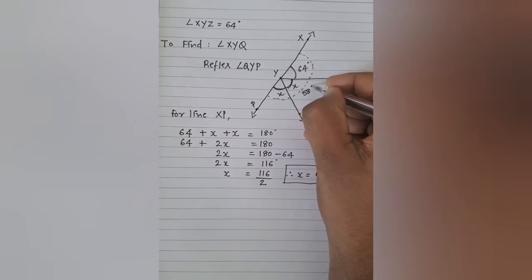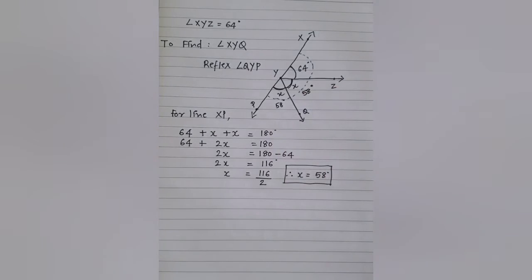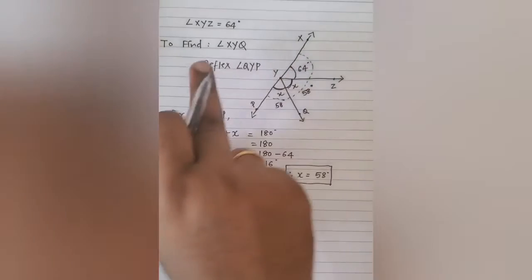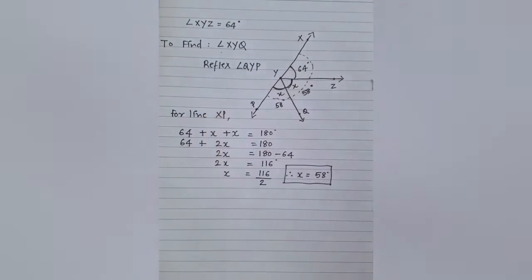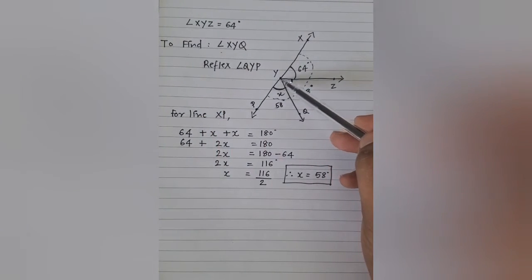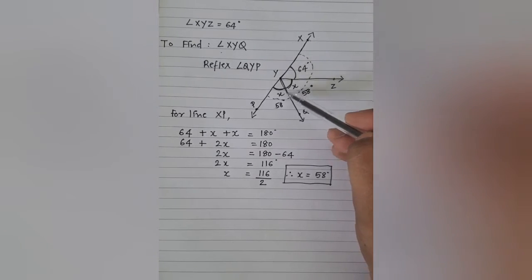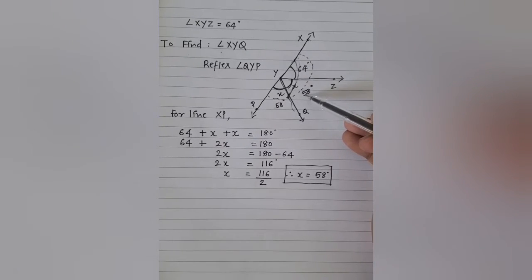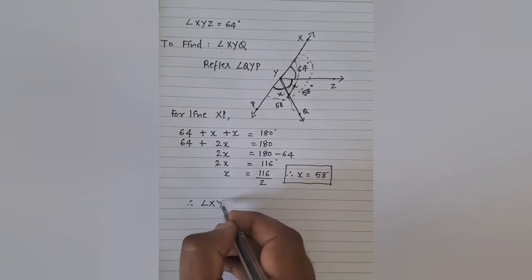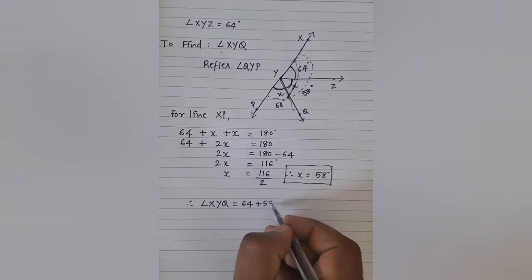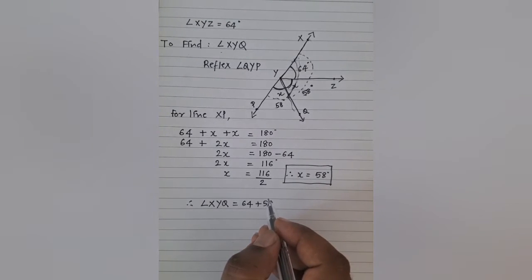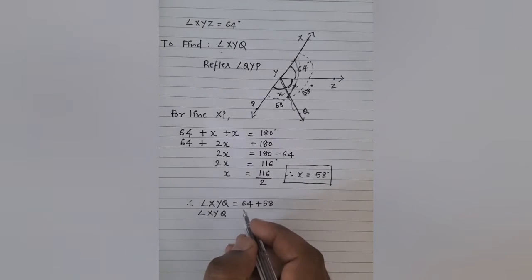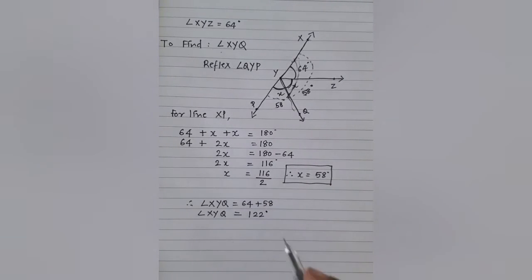So if I mention that over here, this is 58 degrees and this is also 58 degrees. Now, coming back to the question, because I have already utilized the given data. What has been asked? Find angle XYQ. Where is XYQ? This angle is something that we have been asked to find. So this total should be equal to 64 plus 58. Therefore, angle XYQ will be equal to 64 plus 58. When you solve 64 plus 58, angle XYQ is equal to 122 degrees. So we have found this.